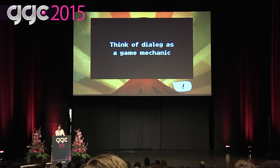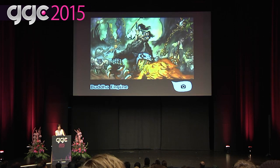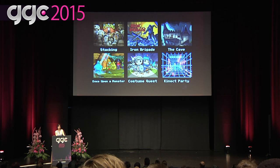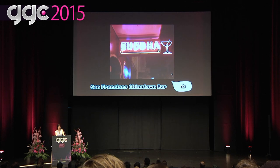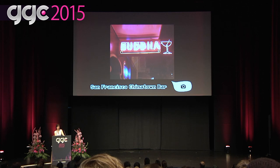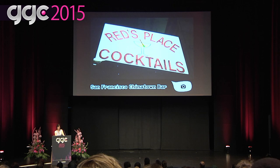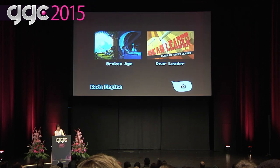I'll be giving you a broad overview of what our dialogue implementation process is like at Double Fine, using examples from our Buddha engine — built for Brütal Legend and used for all our 3D rendered games — and also examples from the Reds engine used for Broken Age and the recent Amnesia Fortnight project, Dear Leader. The Buddha engine was named after a San Francisco Chinatown bar — it's a Double Fine tradition to name engines after Chinatown bars.